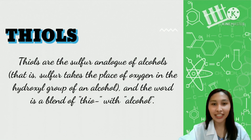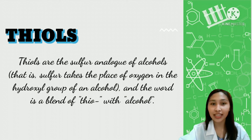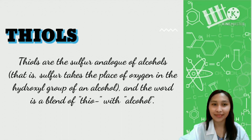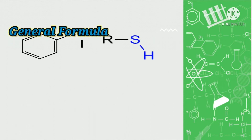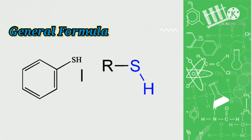Thiols are the sulfur analogues of alcohols — that is, sulfur takes the place of oxygen in the hydroxyl group of an alcohol. The word is a blend of 'thio' with 'alcohol.' The general formula for thiols is R-S-H.